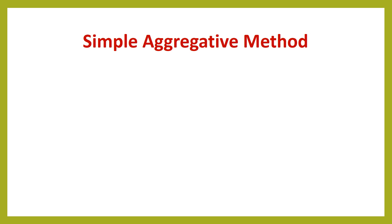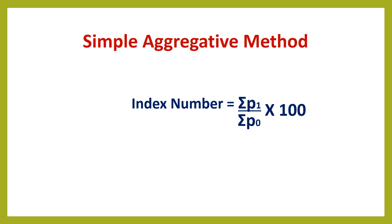The first method is the simple aggregative method. It is the simplest method and only the prices for the base year and current year are required. The aggregate of the current year price is divided by the aggregate of the base year price and multiplied by 100. The index number is equal to Sigma P1 divided by Sigma P0 into 100, where P1 is the current year price and P0 is the base year price.